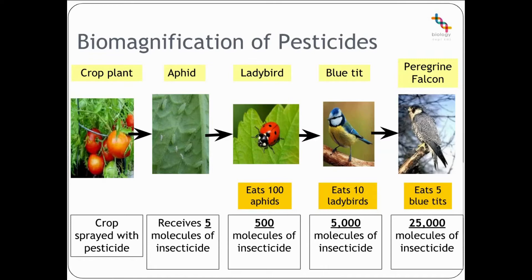Our concentration of pesticide is increasing at each level of the food chain. What might be considered a safe level if you were just eating the crop plant becomes a very unsafe level as we get higher up the food chain.